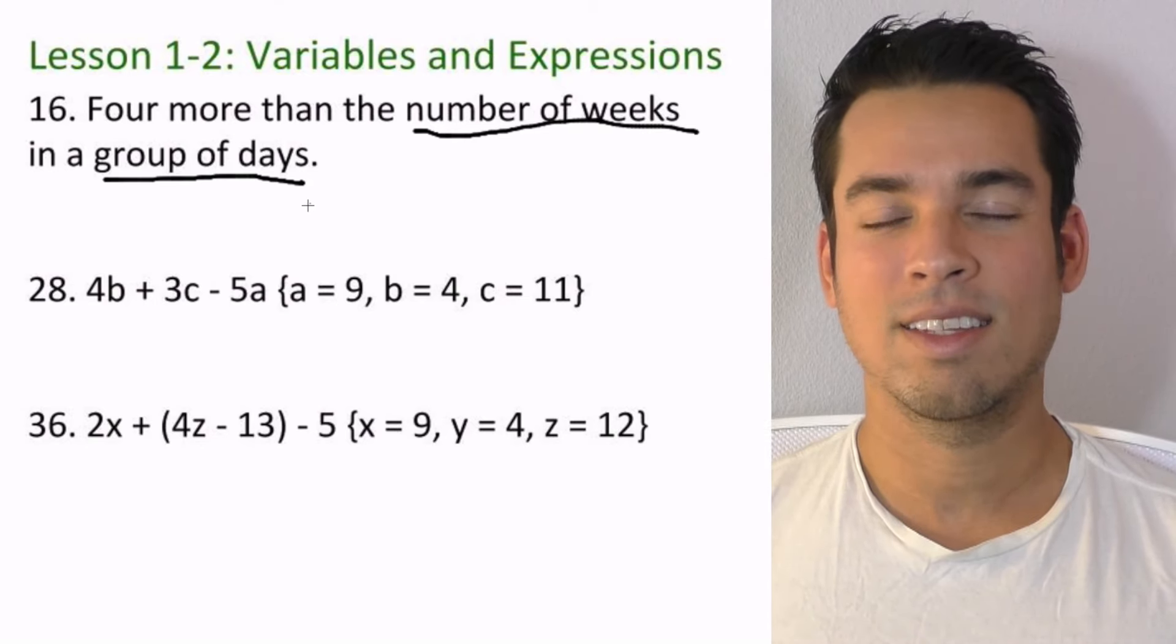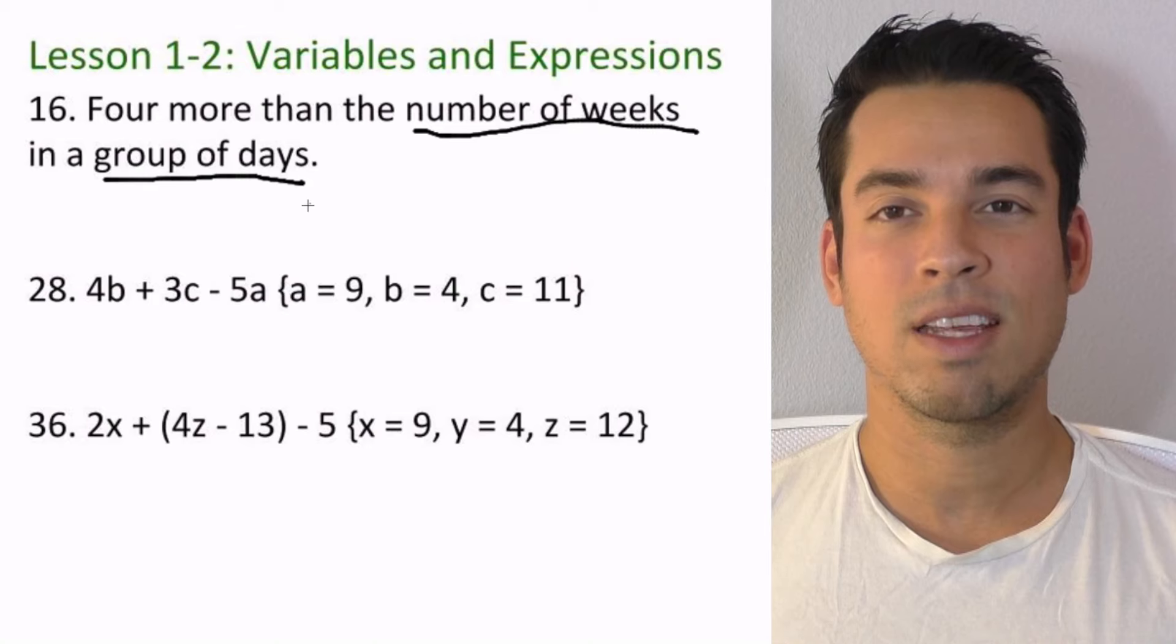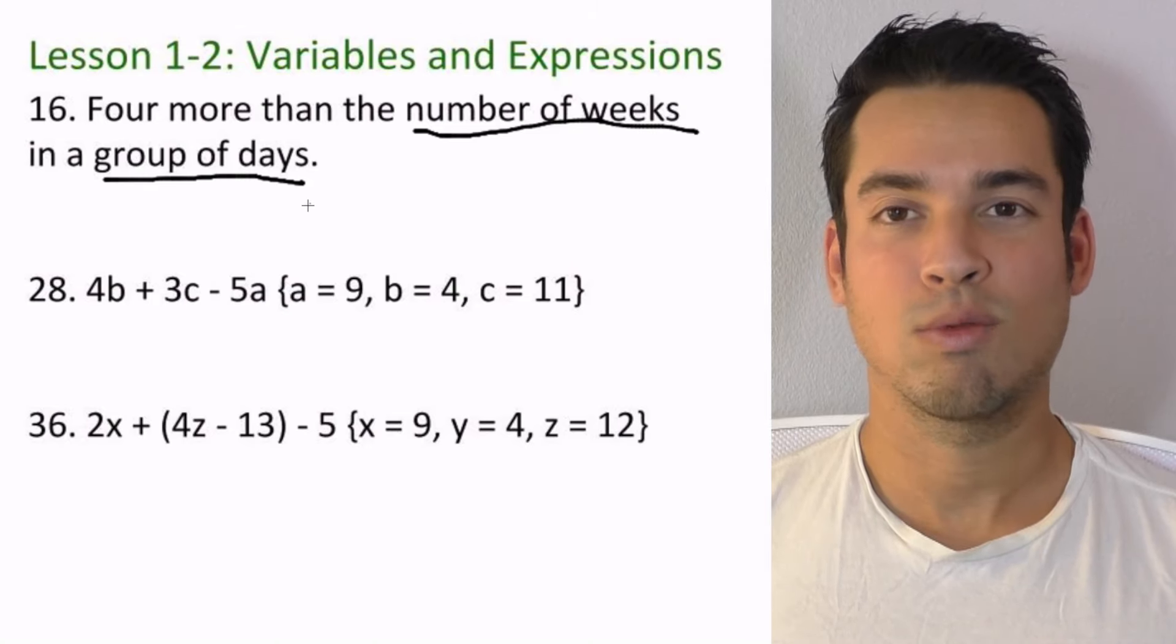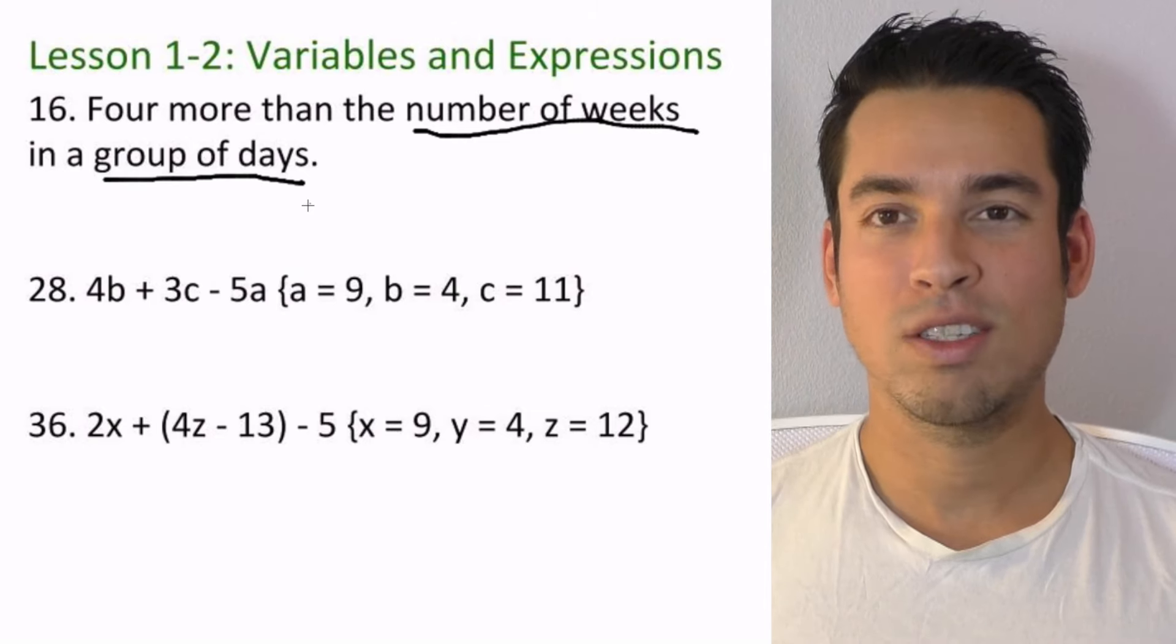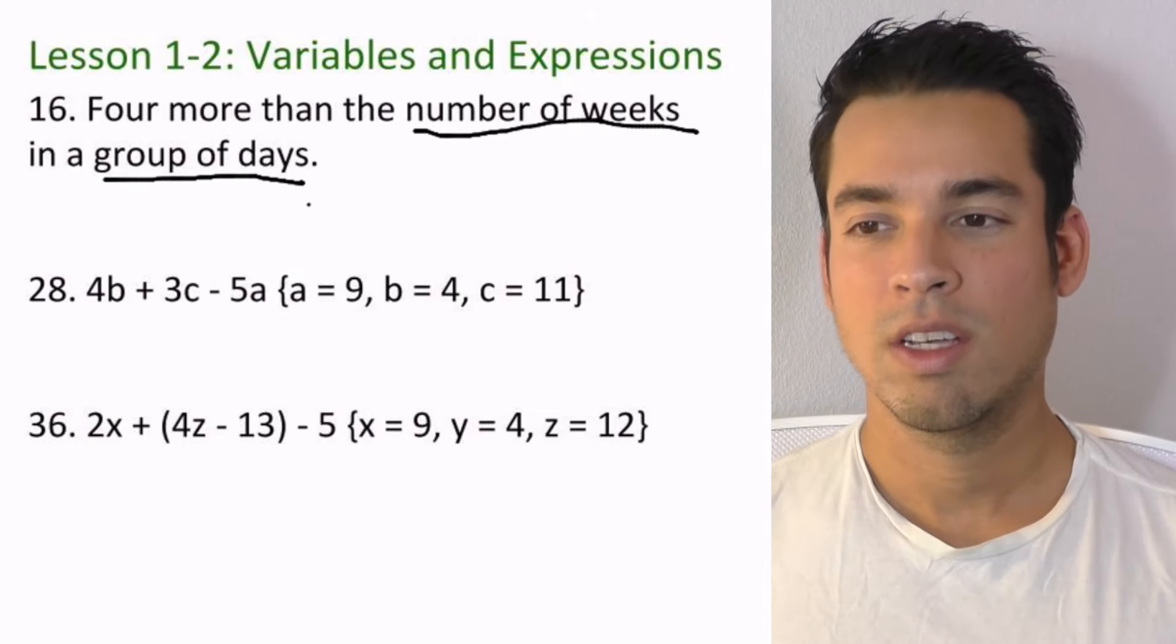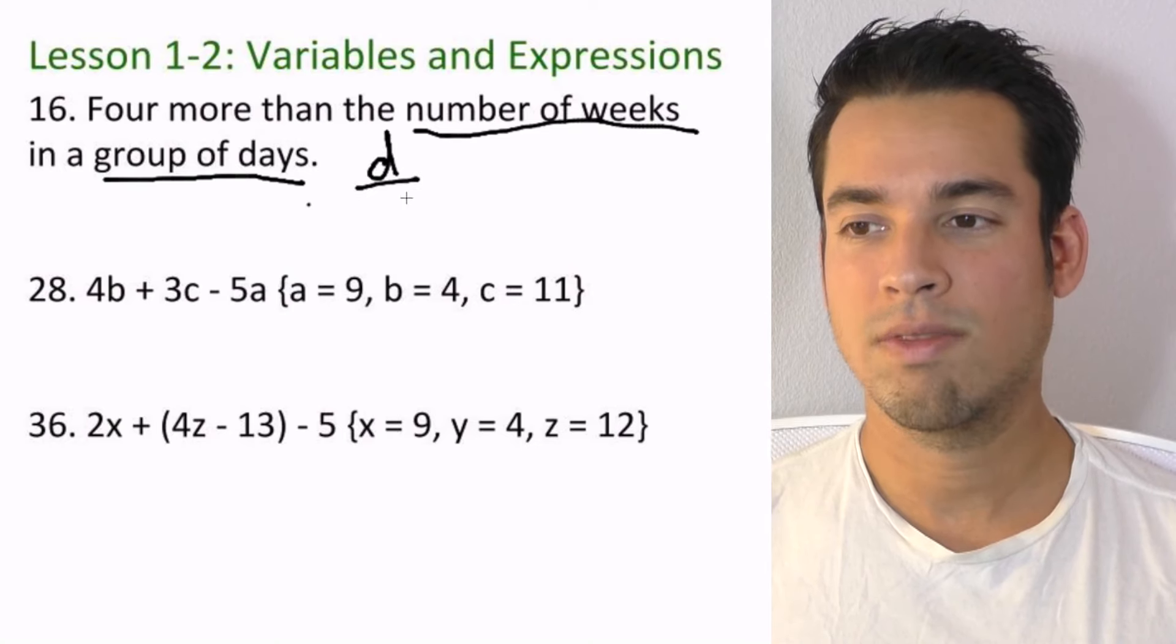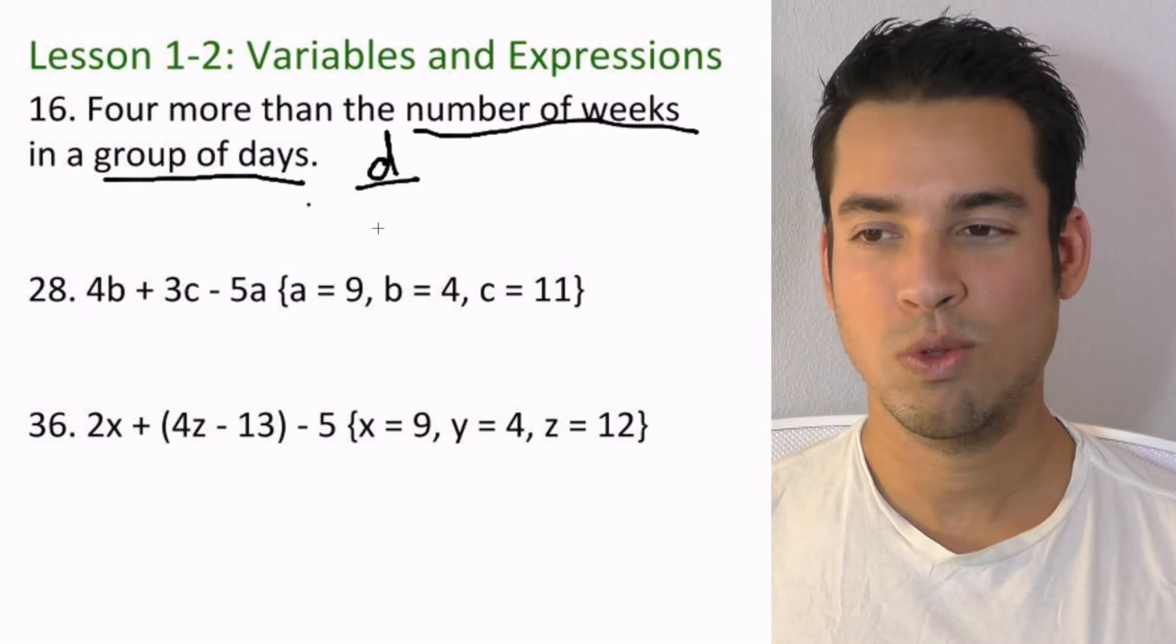If we take the number of days, let's say we take seven days, how many weeks is that? Well, one. How many weeks is 14 days? It's two. How many weeks is 21 days? So all you do is you take your number of days, which we'll represent as d, and you divide it by seven. That's all we're doing.